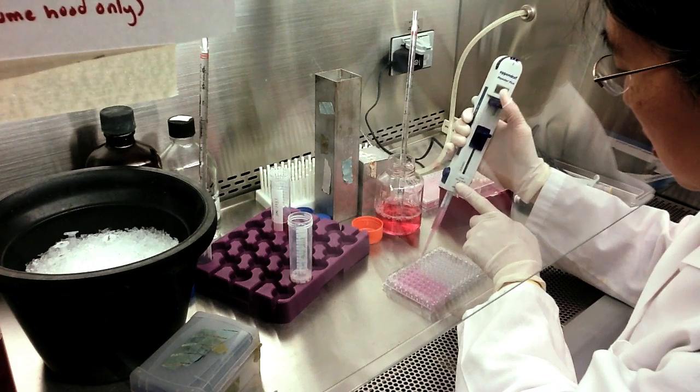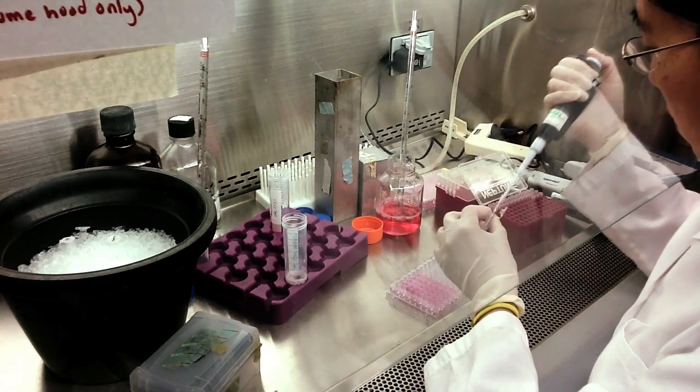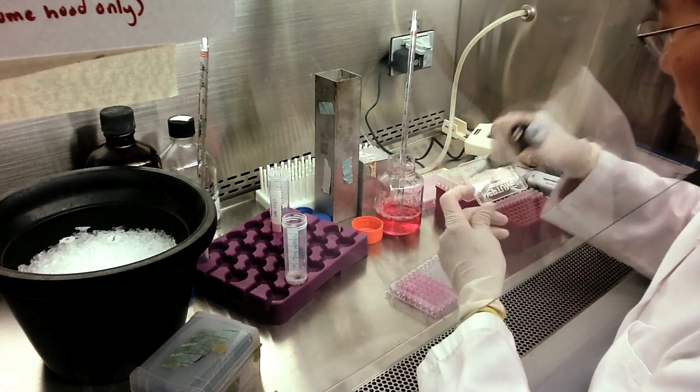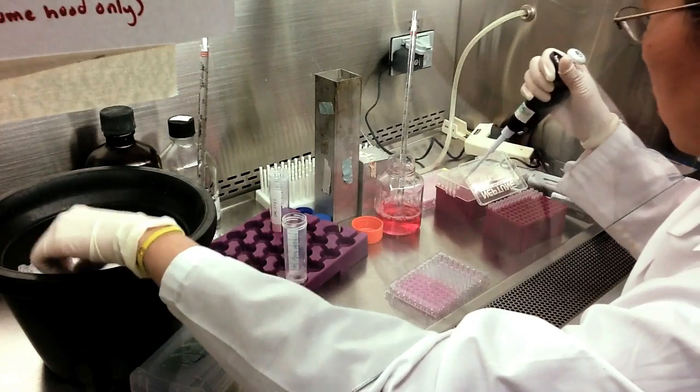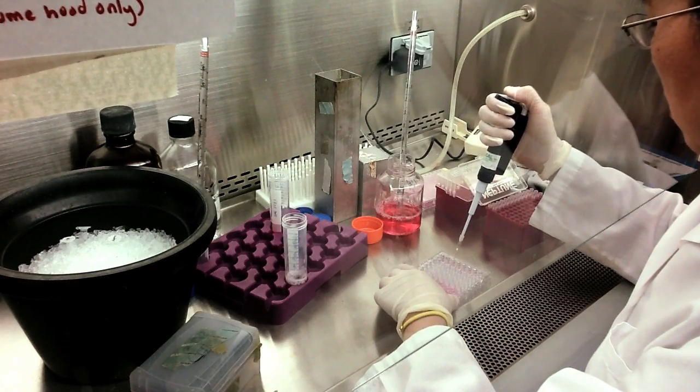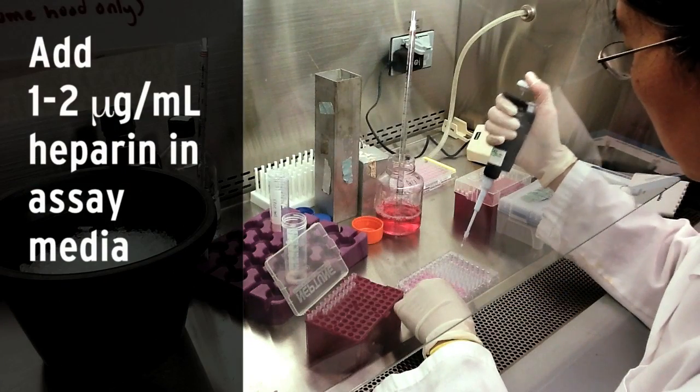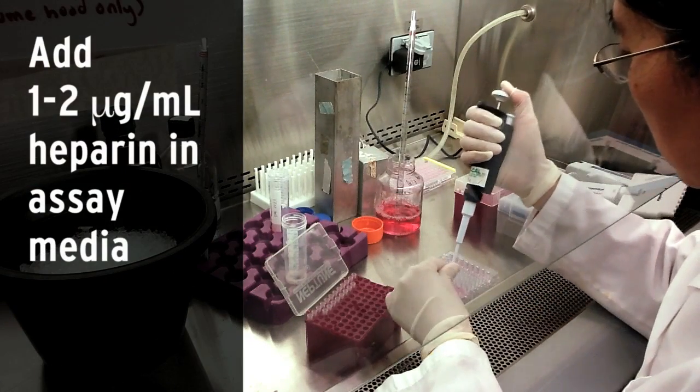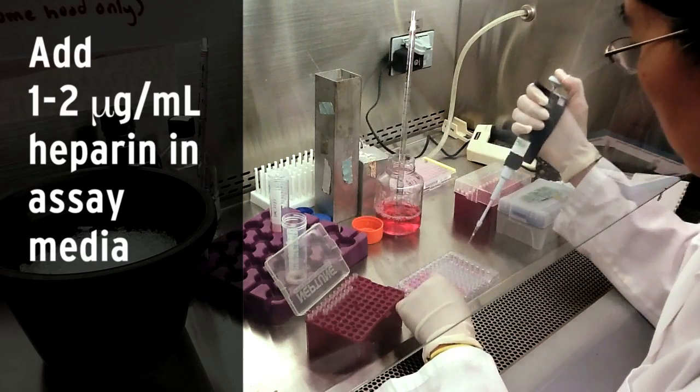A second round-bottom 96-well plate is used to make serial dilutions of FGFs to be assayed. Because BATH-3 cells lack cell surface heparin sulfate proteoglycans, it is necessary to include heparin at a concentration of 1-2 micrograms per ml in the assay media.